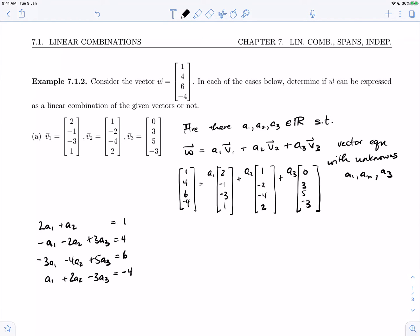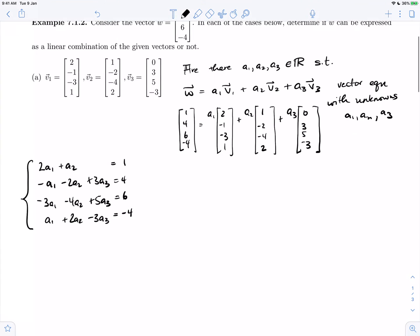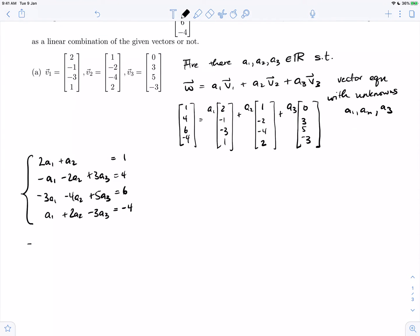So this is now a linear system. And a linear system we are experts at now after our chapter on solving linear systems. We know that we can use an augmented matrix and row operations to reduce the matrix.